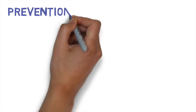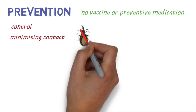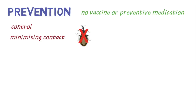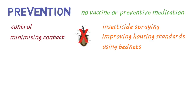How do we prevent and control the disease? There is no vaccine or preventative drugs that can be taken to stop people from getting the disease. Controlling and minimizing contact with triatomine bugs that carry the parasite is one of the most effective ways to control the spread of the disease. This can be done through activities such as spraying houses and surrounding areas with insecticides, improving housing standards and cleanliness to reduce the number of insects living inside, and using bed nets.